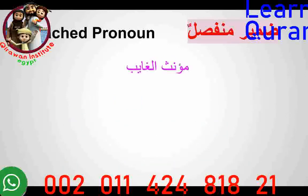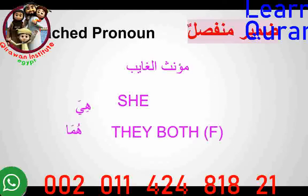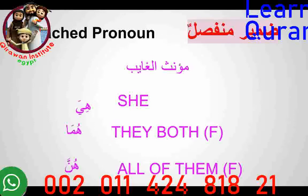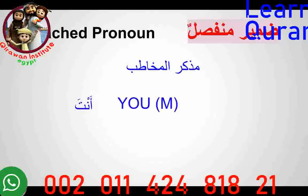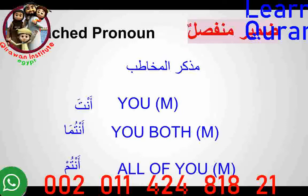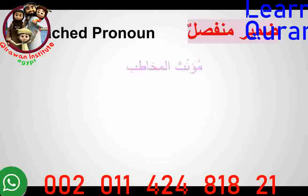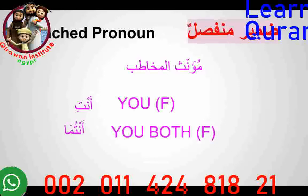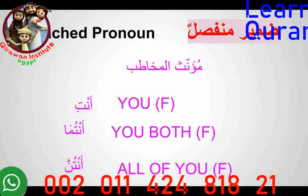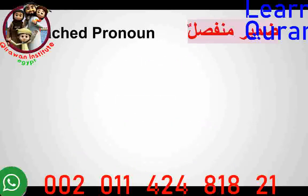For the feminine third person Al-Ghaib: Hiya means 'she,' Huma means 'they both' feminine, and Hunna means 'all of those females.' For Al-Mukhatib, when talking to someone in front of you: Anta means 'you' masculine, Antuma means 'you both,' Antum means 'all of you' males. And for feminine Al-Mukhatib: Anti for 'you' female, Antuma for 'you both' females, and Antunna for 'all of you' females. And when talking about ourselves — Mutakallim — we say Ana meaning 'I,' and Nahnu meaning 'we.'